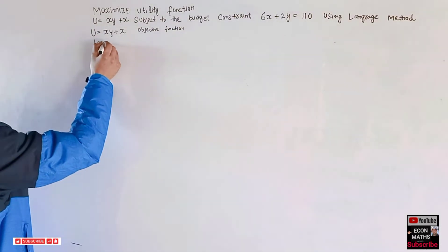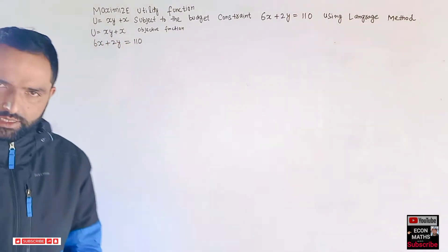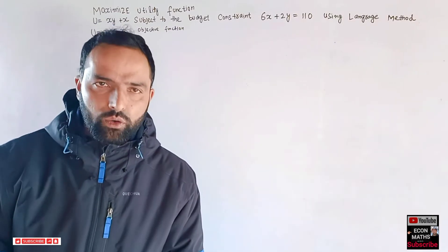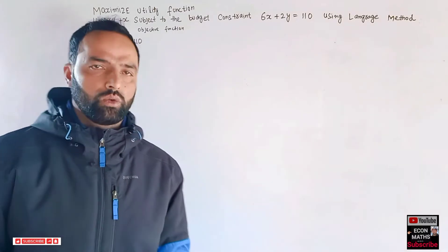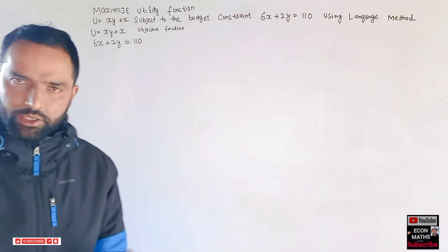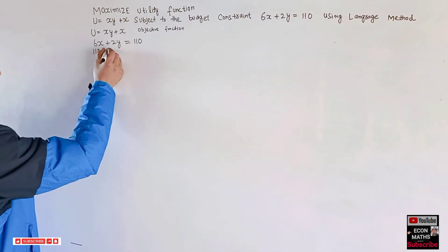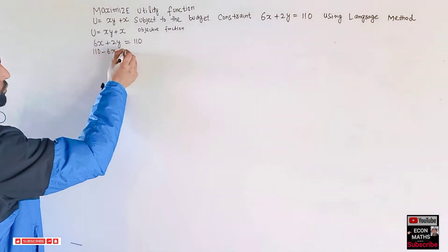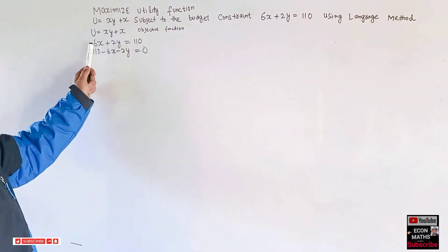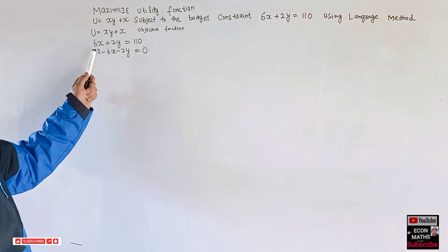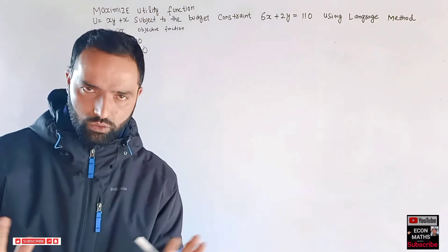The first step in solving this using the Lagrange multiplier is to set our constraint equal to zero. Our constraint is 6x + 2y = 110, which gives us 110 - 6x - 2y = 0 when we transpose all terms.